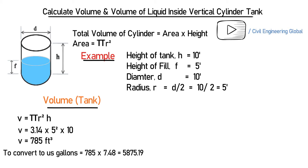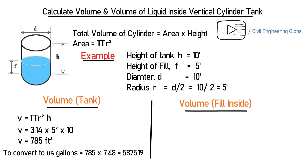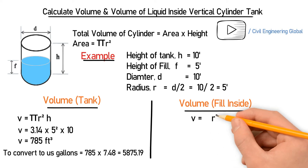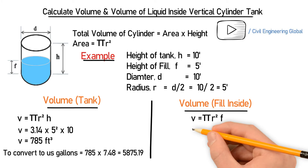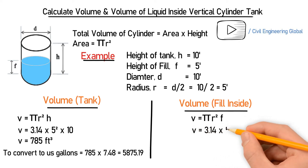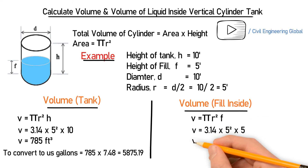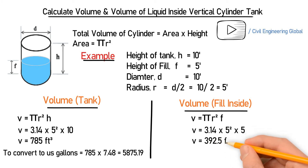Now let's calculate the volume of the liquid filled inside the tank. For this we have the formula V is equal to pi r squared multiplied by F, where F is the filled height. Putting in the values, we get 3.14 multiplied by 5 squared multiplied by 5, giving V equal to 392.5 cubic feet.